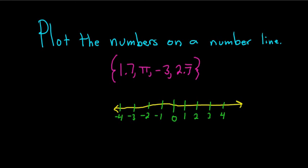Alright, let's plot 1.7. So 1.7 is bigger than 1 and smaller than 2. And it's closer to 2 than it is to 1 because it's 1.7. 1.5 would be right in the middle. So 1.7 is maybe right here. That's our 1.7.